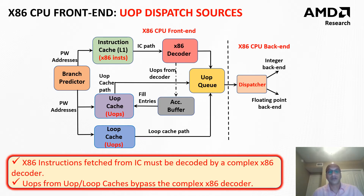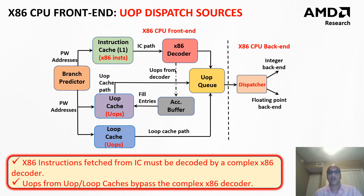This figure shows three main sources of micro-ops in a modern x86 processor. These include instruction cache, micro-operation cache, and loop cache. The instruction cache contains the x86 instructions that are to be decoded by the complex and power-hungry x86 decoder before they are dispatched to the backend. However, the micro-op cache and loop cache contain the previously decoded micro-ops and hence can bypass the x86 decoder. As shown in this figure, the micro-ops decoded by the x86 decoder are accumulated in the accumulation buffer until a termination condition is met, and a group of micro-ops called a micro-op cache entry are written into the micro-op cache.